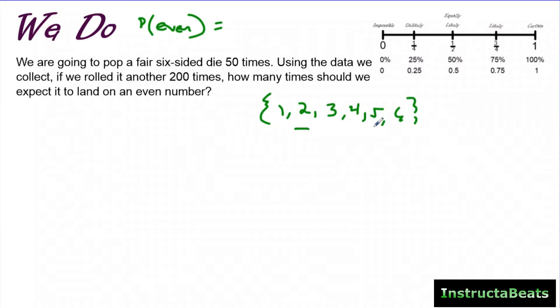On our die, we have 1, 2, 3 even numbers. So our probability is going to be 3 out of 6 possible outcomes, or you could simplify that to 1 half. So we think that we are going to have about 1 half of our rolls land on even. Now we need to actually do our experiment. So this is our theoretical probability. Let's do the experiment and then come back and visit it.